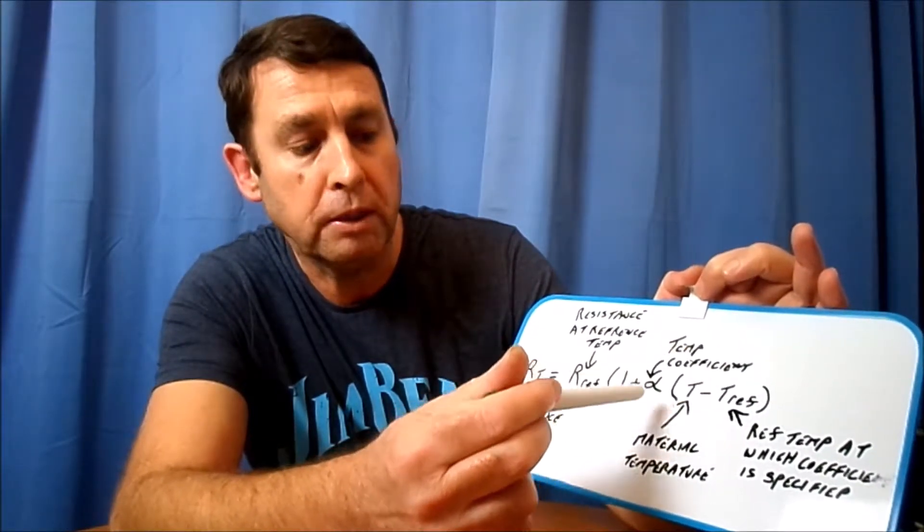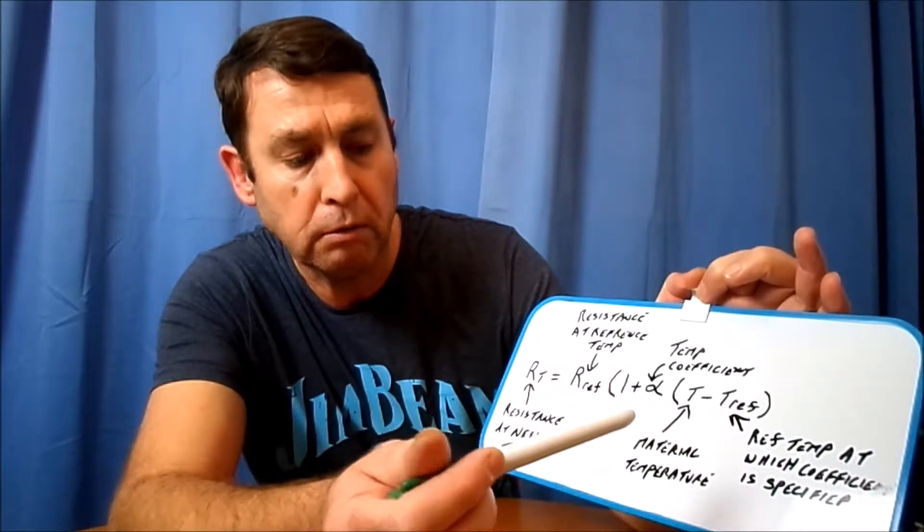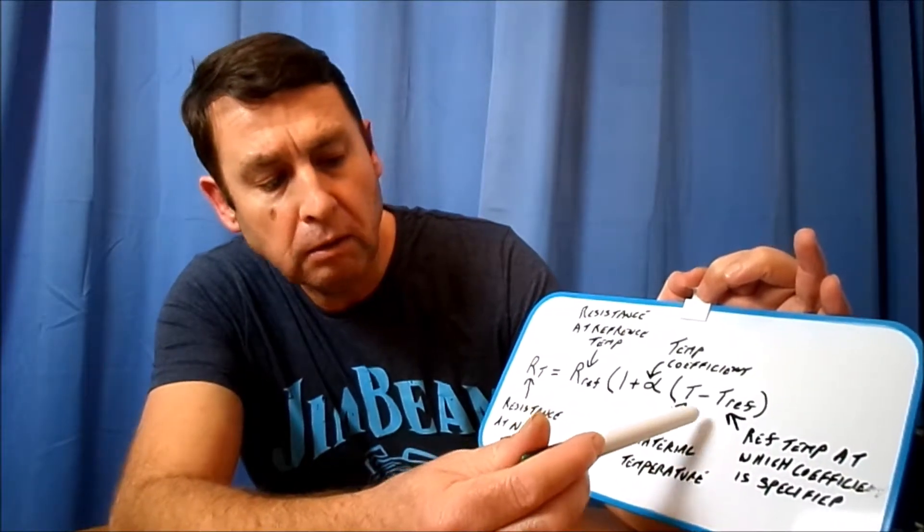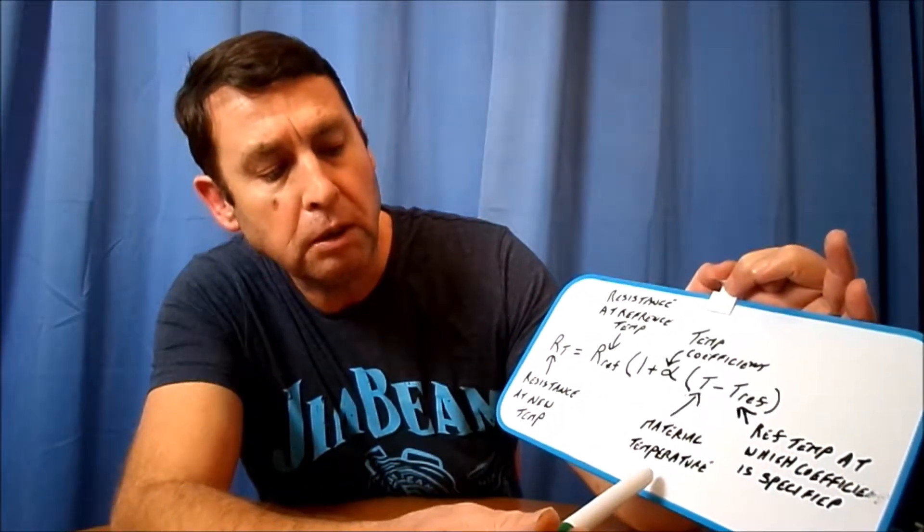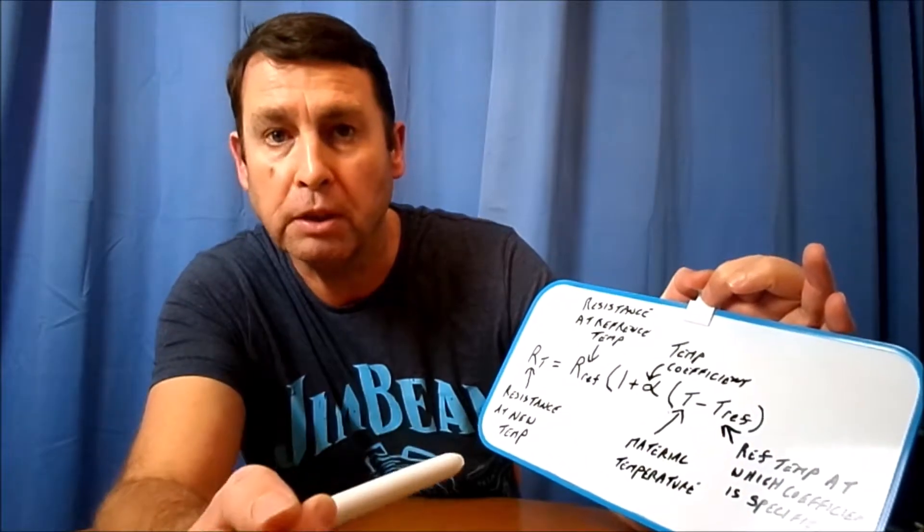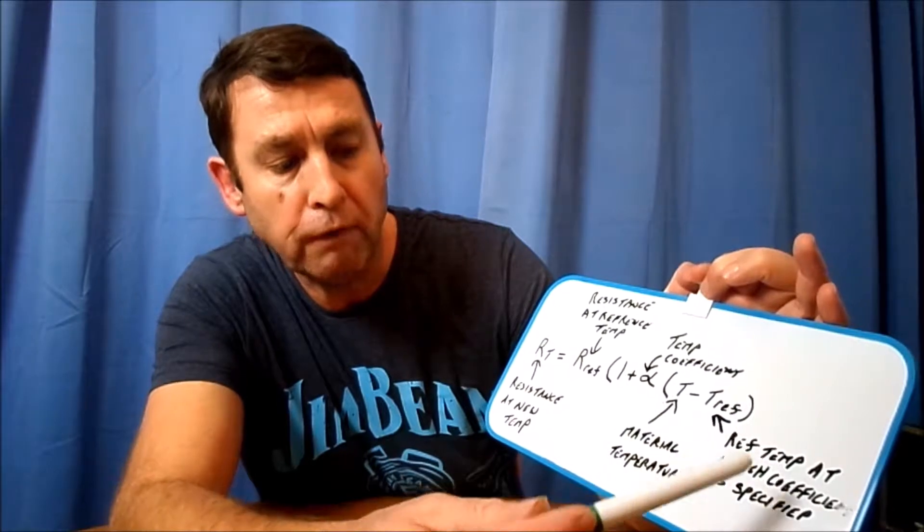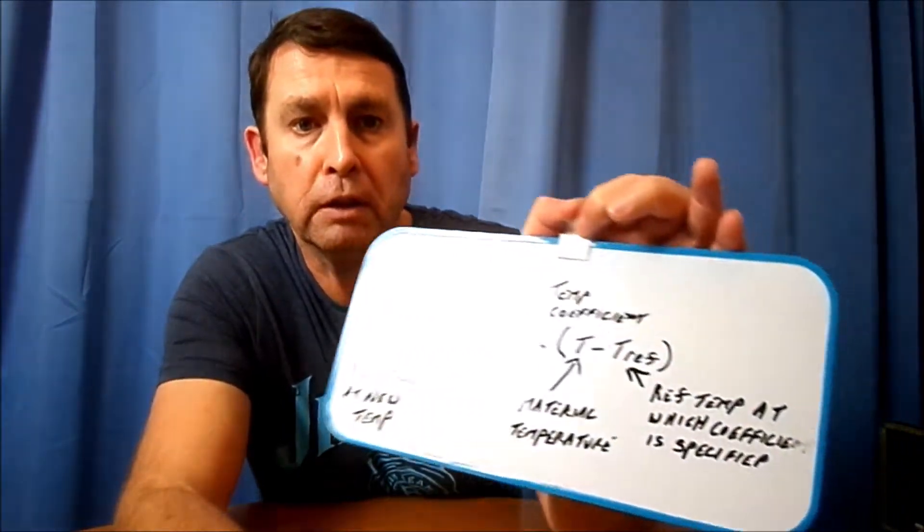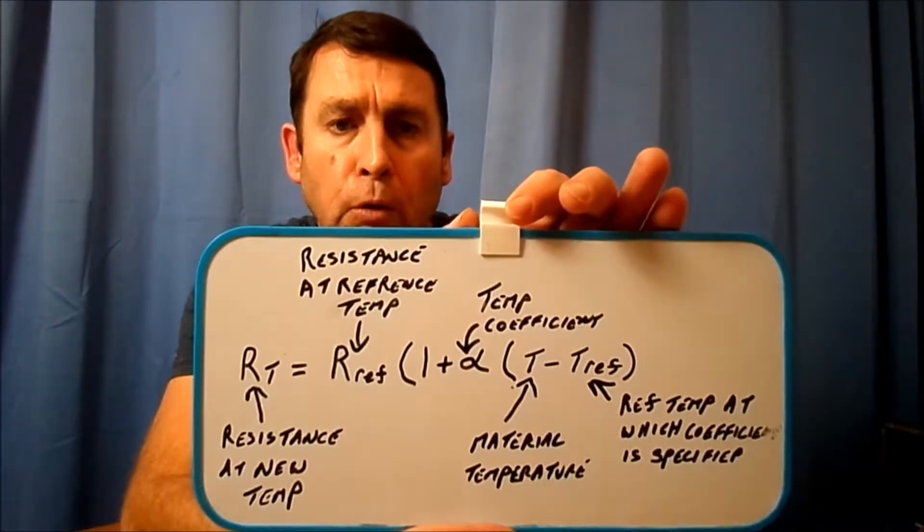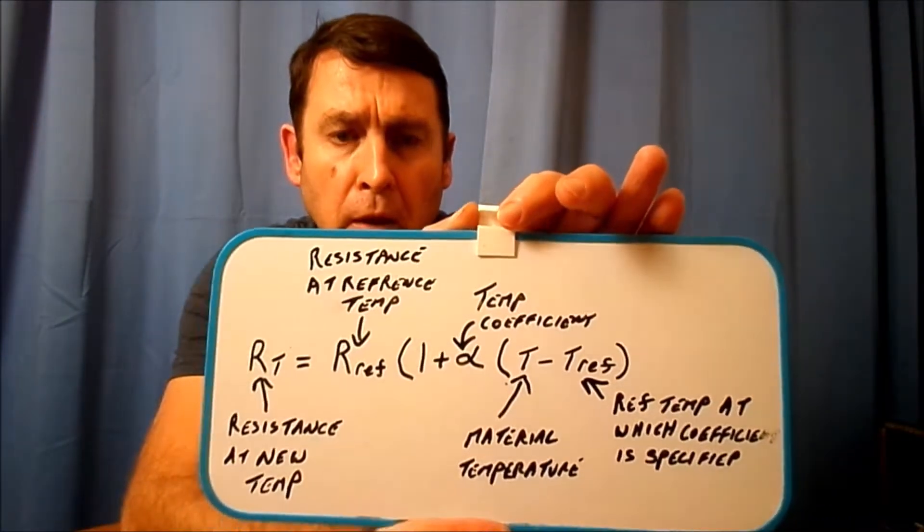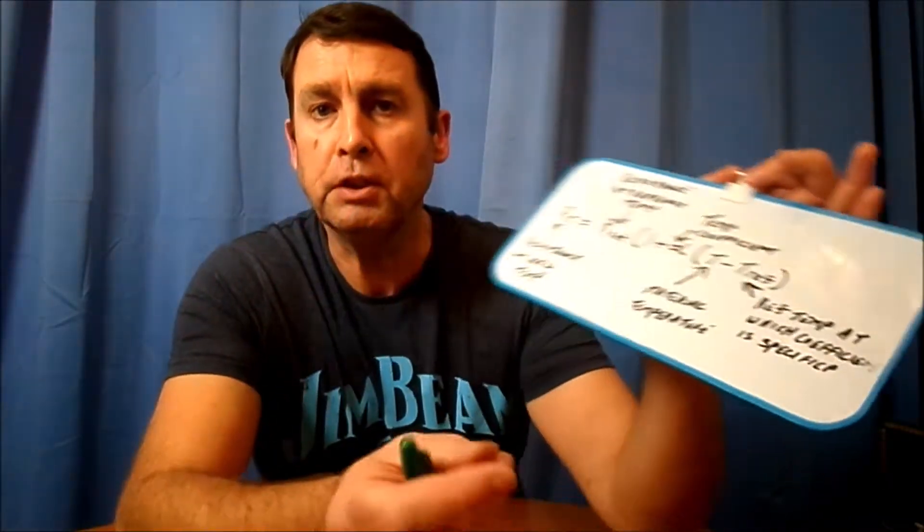The letter alpha will be the temperature coefficient for that material, times T (which is the material temperature at that point in time) minus the reference temperature, which is the reference temperature at which the coefficient is specified. So that's the formula, and using that formula we can then determine the resistance of that material at any temperature.